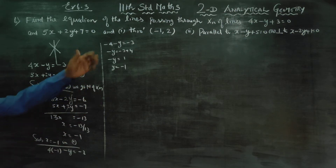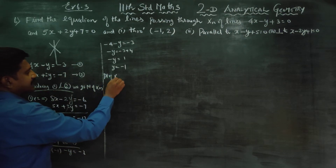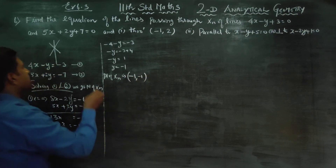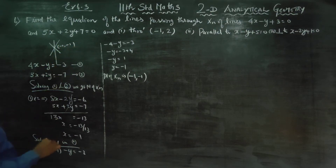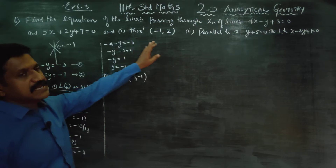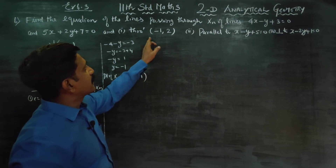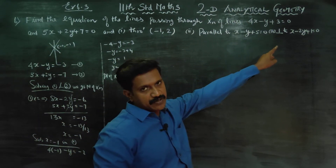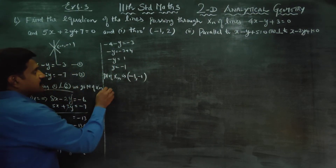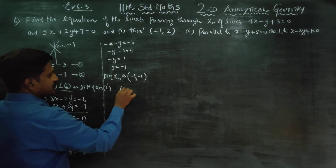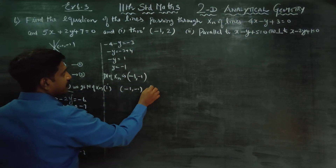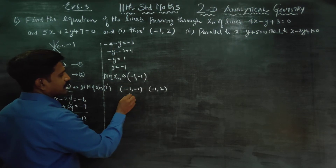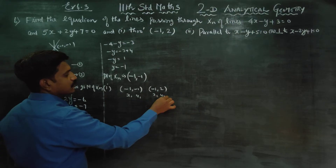Therefore, the point of intersection is (minus 1, minus 1) — x-coordinate minus 1, y-coordinate minus 1. Now we have three sub-questions: passing through a given point, parallel to a line, and perpendicular to a line. For the first sub-question, the point of intersection is (minus 1, minus 1) and the given point is (minus 1, 2). Using the two-point formula with x1, y1 and x2, y2, we find the equation of the required line.